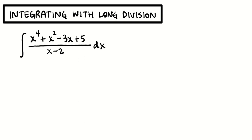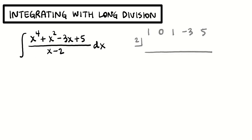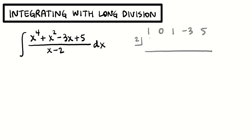Now in AP Calculus, we can use synthetic division for that. I'm copying the coefficients: 1x to the 4th, 0x to the 3rd — that's what you have to remember about synthetic division, if there's a missing power we still have to put in the 0 — 1x squared, negative 3x, and 5. I'm going to divide that by x minus 2, and inside the box we put whatever would be the zero of the denominator. This works when the denominator is just x minus a number or x plus a number.